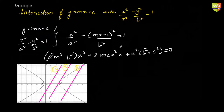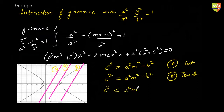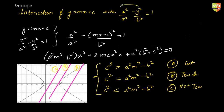I'm just going to write down the result. If c² is greater than a²m² − b², it will cut the hyperbola. If c² is equal to a²m² − b², it will touch the hyperbola. And if c² is less than a²m² − b², it will not touch the hyperbola. Please remember these conditions are very much specific to this hyperbola only.